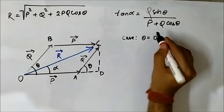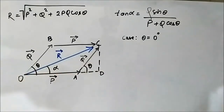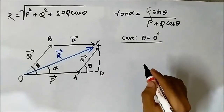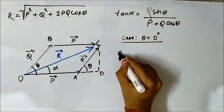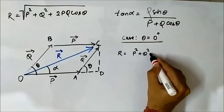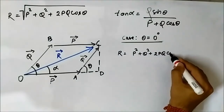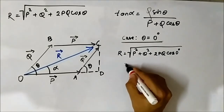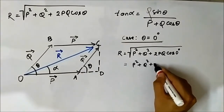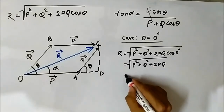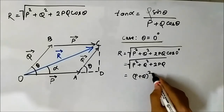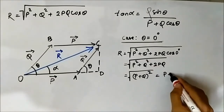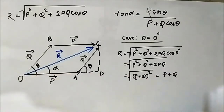Case 1: When both vectors are in the same direction, theta = 0°. The value of R = √(P² + Q² + 2PQ cos 0°). Since cos 0° = 1, this becomes √(P² + Q² + 2PQ) = √(P + Q)² = P + Q. So R equals P + Q, the sum of the magnitudes of the two vectors.